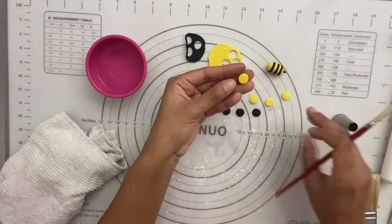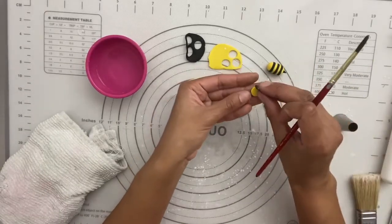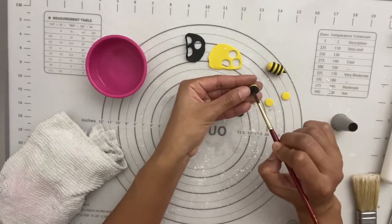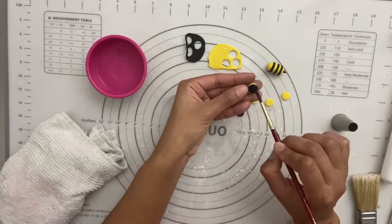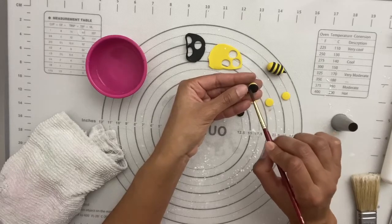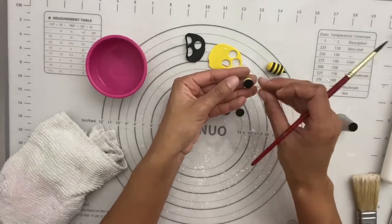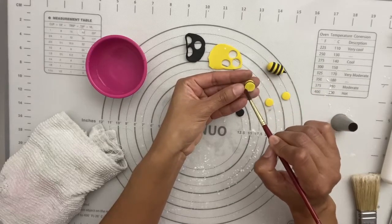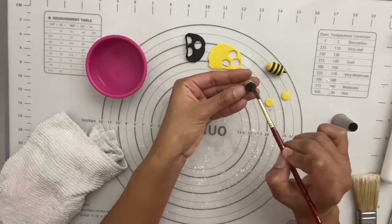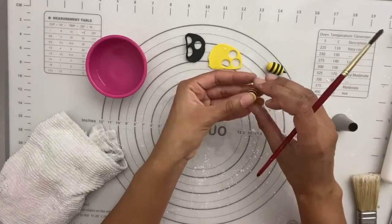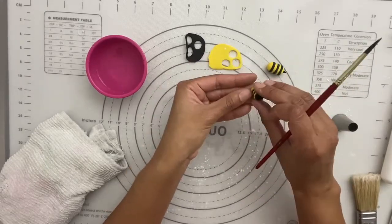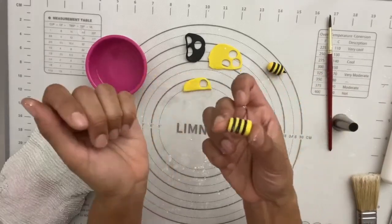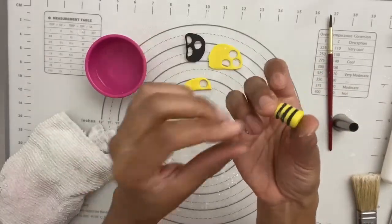So I'm going to start with a thicker piece and I'm going to wet the back. You don't want to drench it. You want to wet it just enough. And then you're just going to alternate your colors.